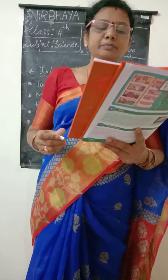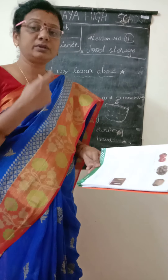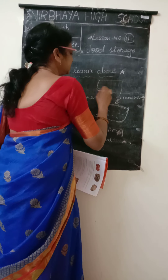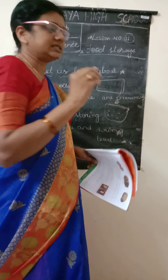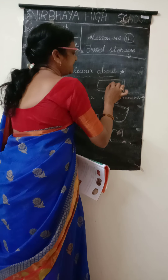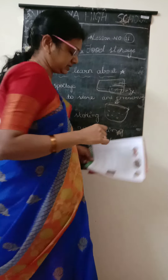Some food items that we buy from the market have a date indicating when the food will be spoiled. It may be given as 'use before,' 'best before,' or expiry date. If you go to a shop to buy a biscuit packet, you will see the expiry date and manufacturing date. We must always check the date before buying food items.